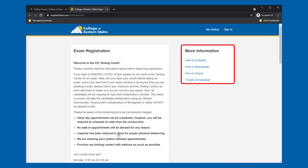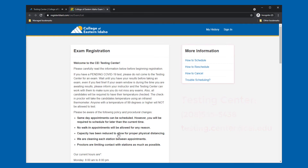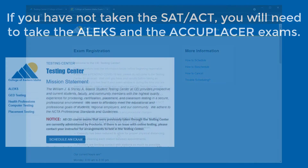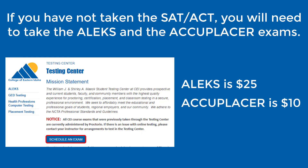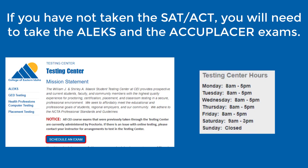If you have any questions, you can review the More Information links or contact the Testing Center directly. If you've not taken the SAT or ACT previously, you'll need to take the ALEKS and Accuplacer exams in our Testing Center. The ALEKS is $25 and the Accuplacer is $10. Keep in mind that the Testing Center has very flexible hours.